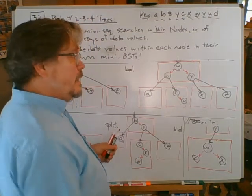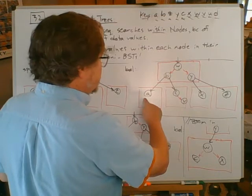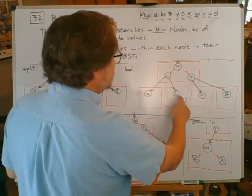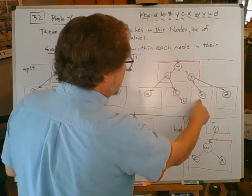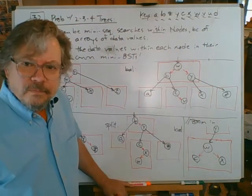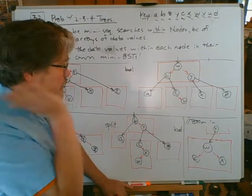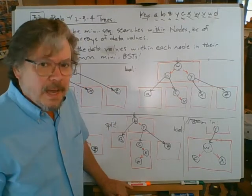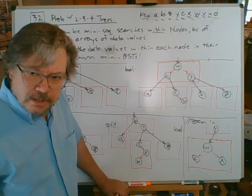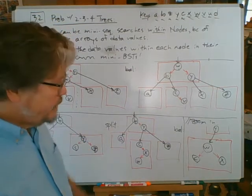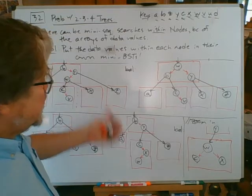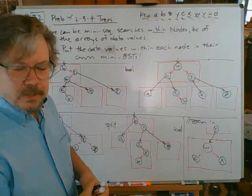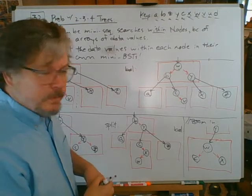If we ignore the red boxes, what we have is an almost completely balanced binary search tree. It's keeping itself balanced by doing all the splits and the balances and all that stuff. It's a painful process but it's worth it if we've got a huge database and we don't want it to degenerate into order-n searches.